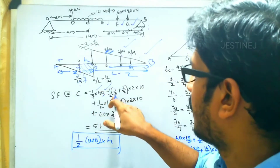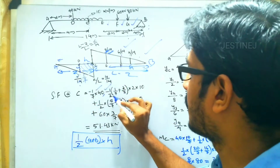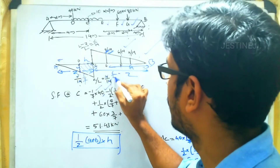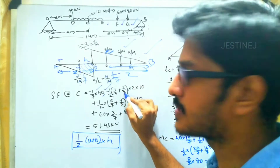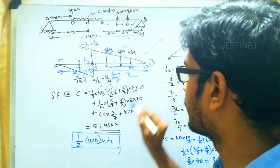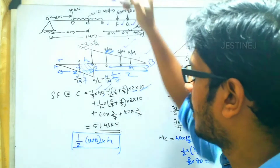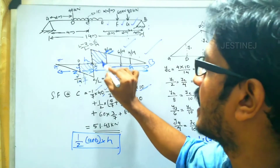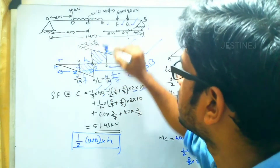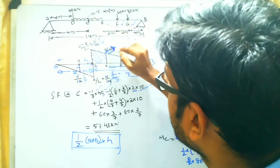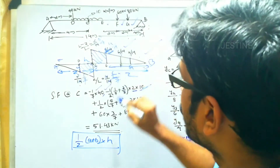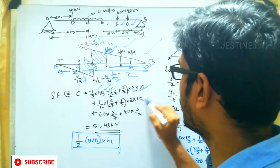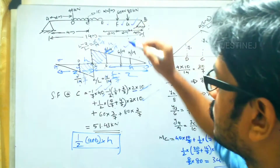The negative trapezium area from D to C: ½ × (1/7 + 2/7) × 2 × 10. Then the positive trapezium area from C to E: ½ × (5/7 + 4/7) × 2 × 10, where 5/7 and 4/7 are the ordinates at C and E respectively, and 2 is the span distance. Both results are then added accordingly.